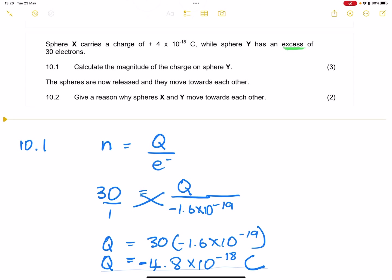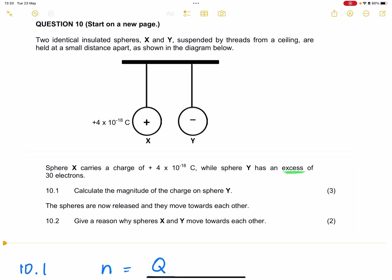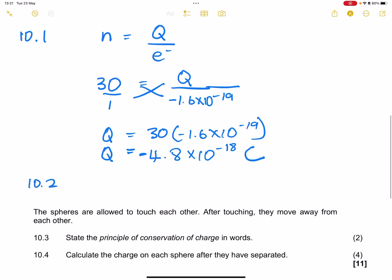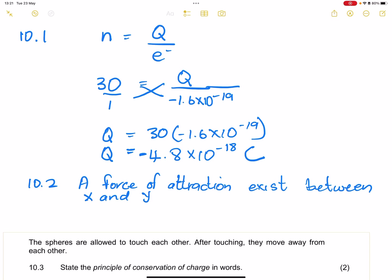And then the next question, they say the spheres are now released and they move towards each other. They say give a reason why spheres X and Y move towards each other. Now obviously, they are oppositely charged, so we know that unlike charges attract. So in this case, that will be because of the force of attraction between the two charges. So we'll say a force of attraction exists between X and Y. Now let's make a little bit of space here and go on to the next question.